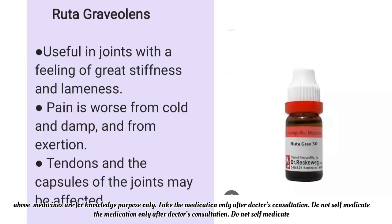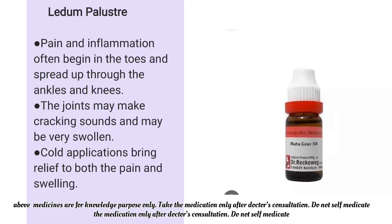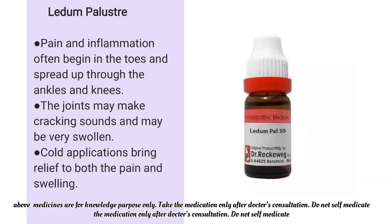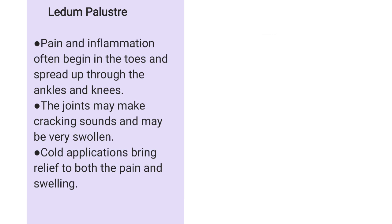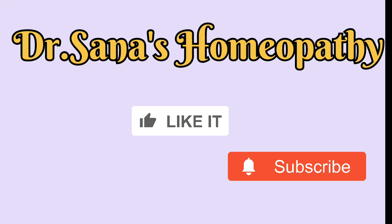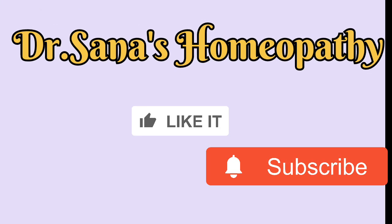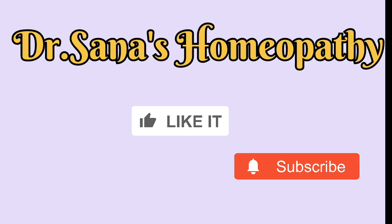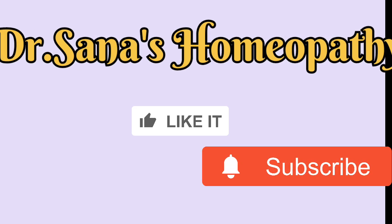The next homeopathic drug is Ruta, which is useful in joints with a feeling of great stiffness and lameness; tendons and the capsules of joints may be affected. The next is Ledum pal, whose peculiar symptom is that pain and inflammation often begin in the toes and spread up through the ankles and knees. Joints may have cracking sounds, and cold applications bring relief to both the pain and swelling.